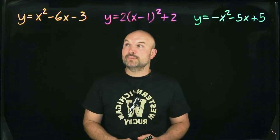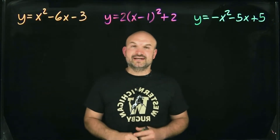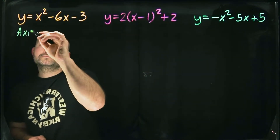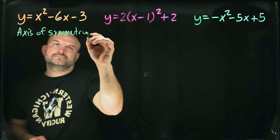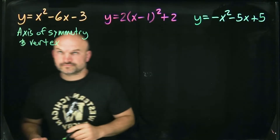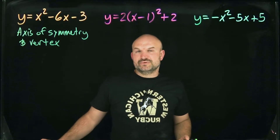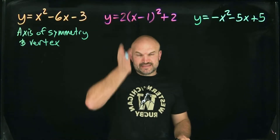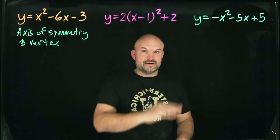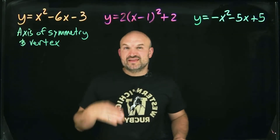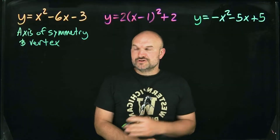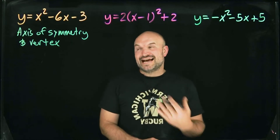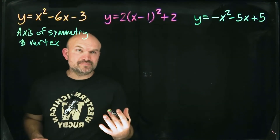When you have something in vertex form, one of the first things we learn about graphing a quadratic is identifying the axis of symmetry as well as the vertex. The axis of symmetry is the line that the graph is symmetrical about, and importantly, the vertex goes right through it. The axis of symmetry is at x equals negative b divided by two a.